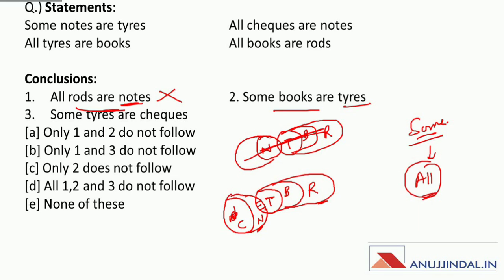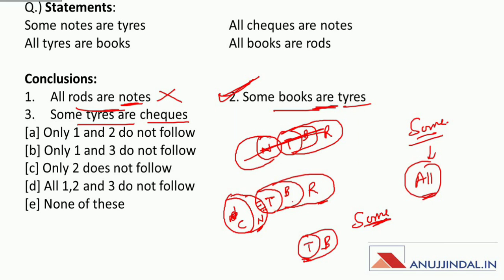Now next: some books are tires. Book and tire ka joh relation hai, woh 'all' wala hai. Joh bahar wala bada wala circle hoota hai, us mein joh 'some' hoota hai, woh definite hoota hai. Aur yeh bhi definite hai — so 'some books are tires' will be absolutely correct. Now: some tires are checks. Between tire and check there is no direct relation, which means we can't say about this conclusion — it will be incorrect. Since the incorrect conclusions are 1 and 3, the answer will be B — only 1 and 3 do not follow.